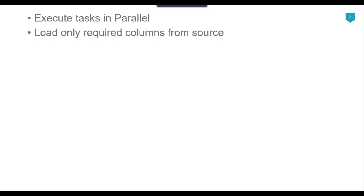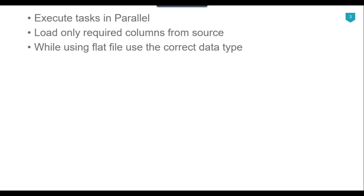The second thing is that you should try to load only the required columns from the source. In a data flow task, if you are loading data from a flat file, Excel, or SQL Server, you should only load the columns that are actually required. For example, if only three or four columns are required out of 50 or 100 columns, you should import only those, as it saves time and disk space.